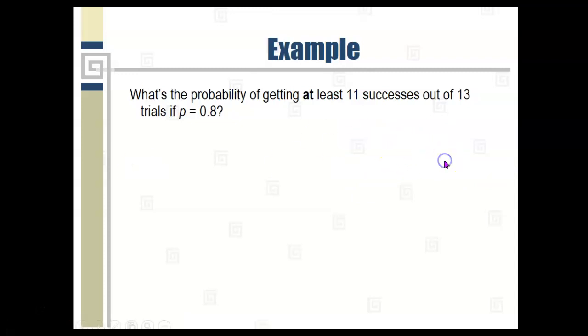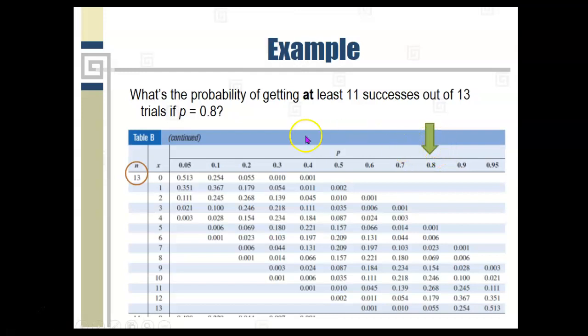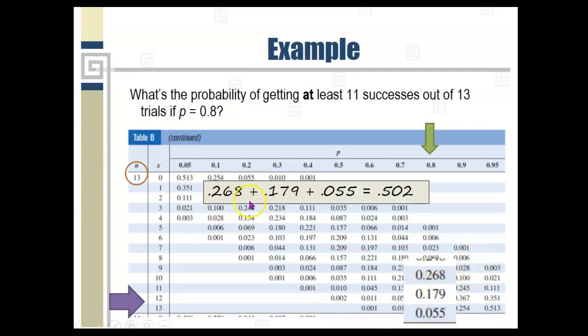So, to answer that question, well, if we're using the table, we're still looking at the same part of the table, but we're looking at all of the X's that are at least 11. That's the 11 and the 12 and the 13. Take all those probabilities and add them together because getting at least 11 means that the number of successes is either 11 or it's 12 or it's 13. So, we would add those three probabilities together, 0.268 plus 0.179 plus 0.055 and that adds up to 0.502. So, that's the answer to that question.